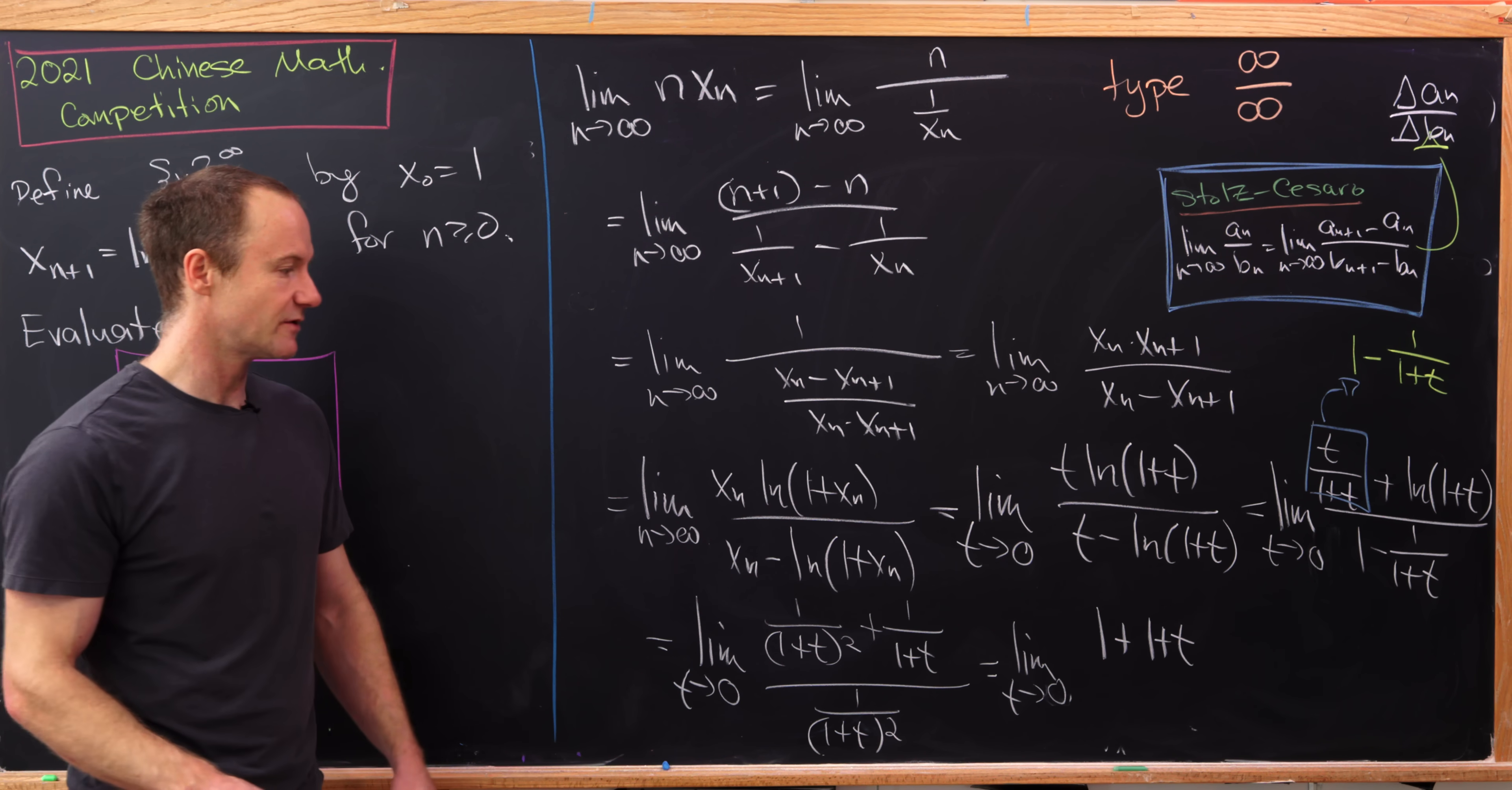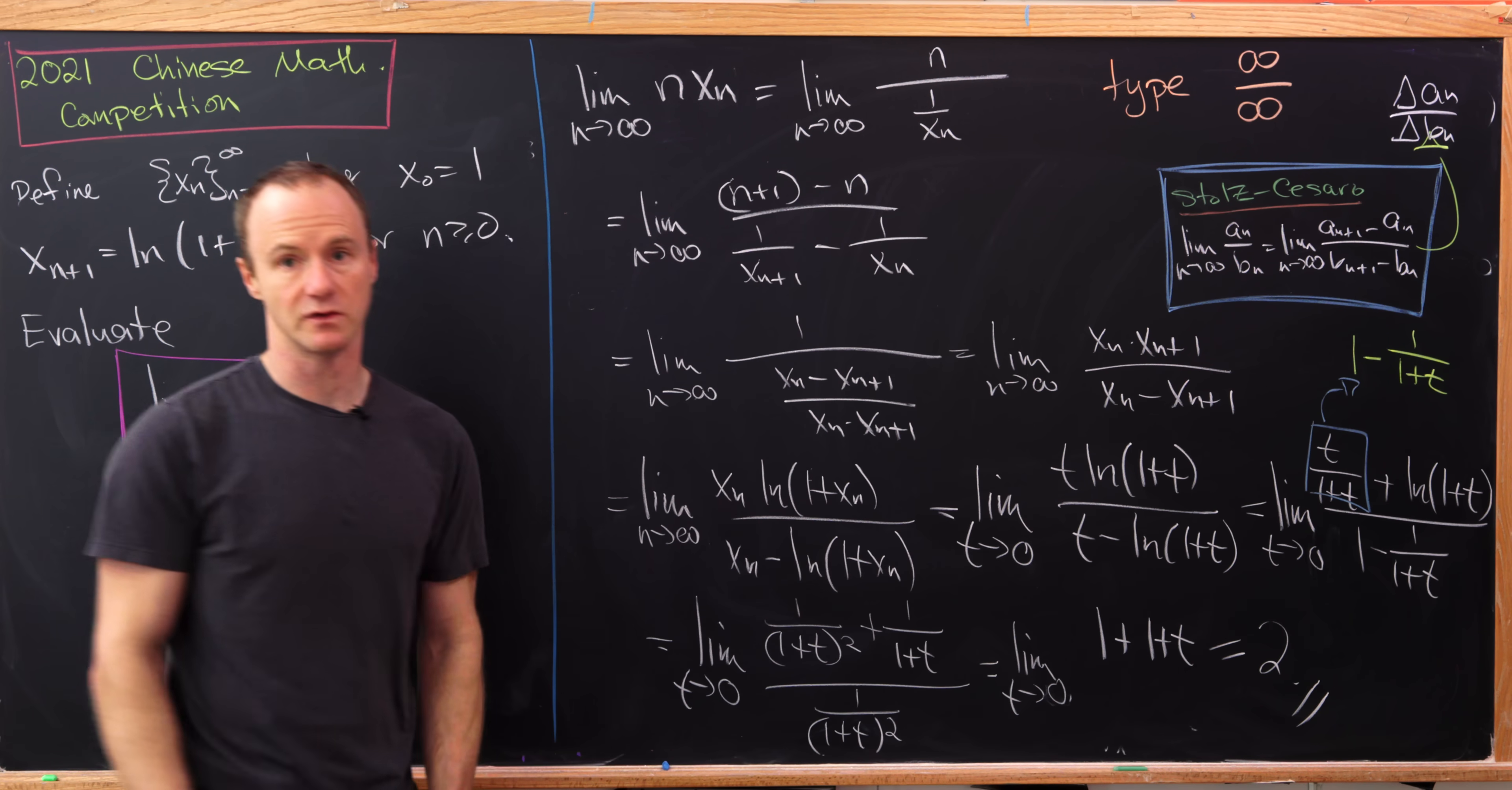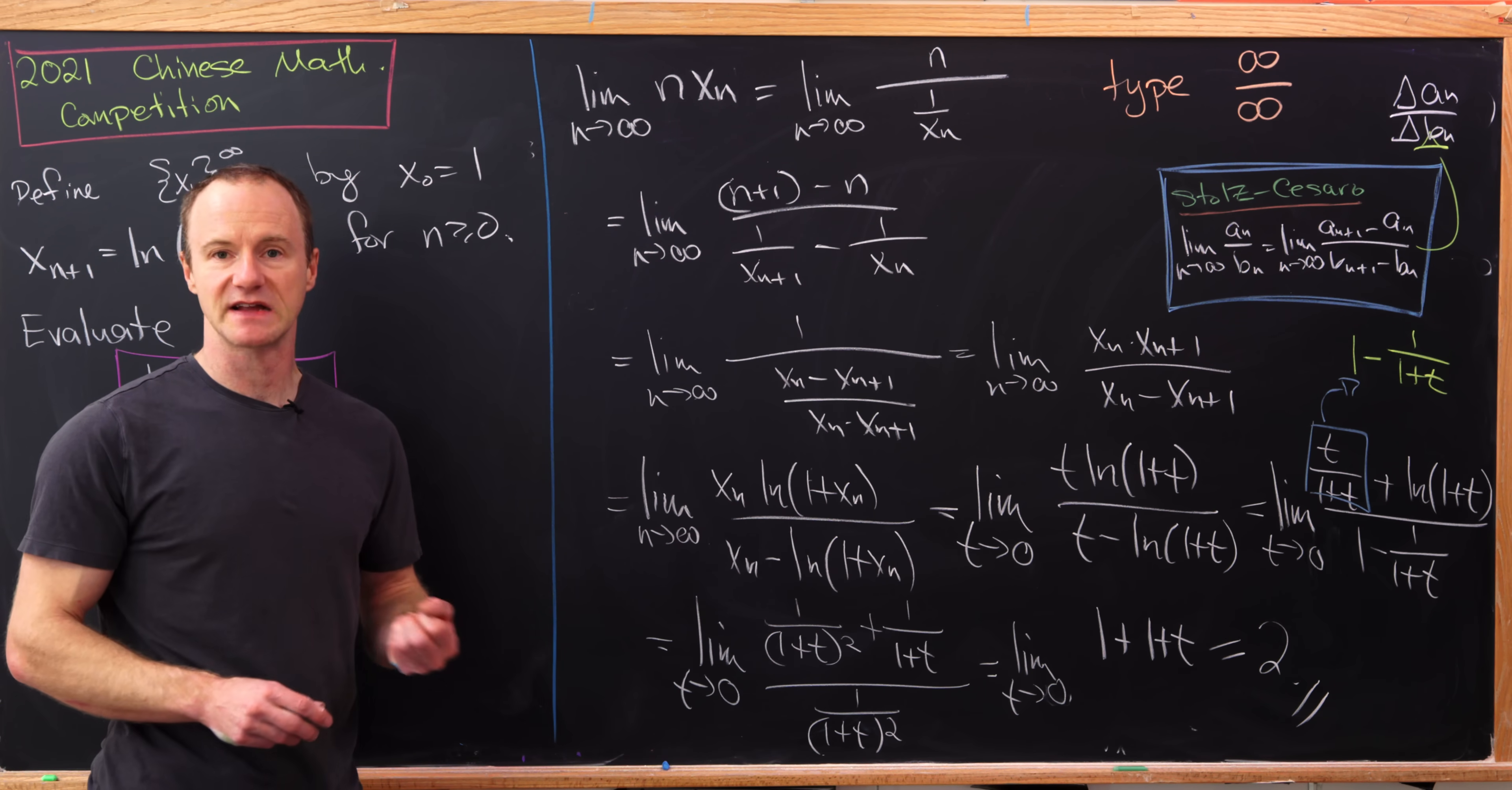But as t goes to 0, that clearly goes to 1 plus 1 plus 0, in other words, the number 2. So that's our final limit and that's a good place to stop.